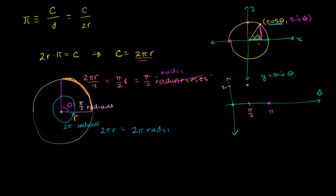We're talking about sine of theta. Then we can go all the way down here, where you could view this as 270 degrees, or 3 pi over 2 radians. So at 3 pi over 2 radians, sine of theta is the y-coordinate on the unit circle, which is negative 1.